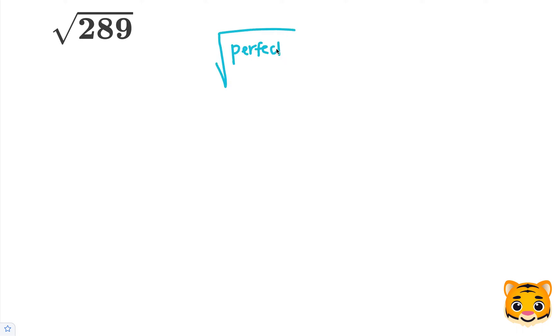A perfect square is a number that if you take its square root you will get a whole number value as a result.